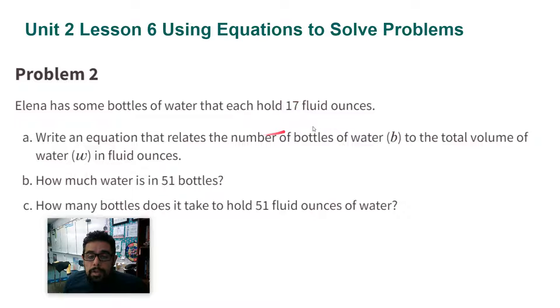So now when I write my equation, B is the number of water bottles and W is the amount of fluid ounces. To find the amount of water, I'm going to multiply 17 times the number of bottles.